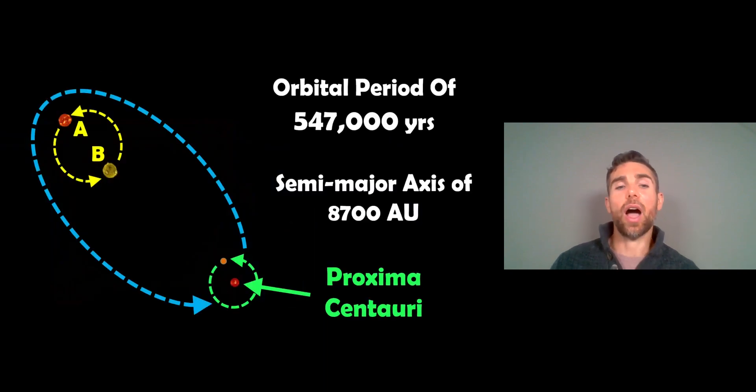Now around the outside of that, you then have Proxima Centauri. So you have this red dwarf, which is then orbiting around the outside of Alpha Centauri A and B. And its orbital period is 547,000 years. So it's on a very wide orbit this time around. And its semi-major axis is about 8,700 AU.